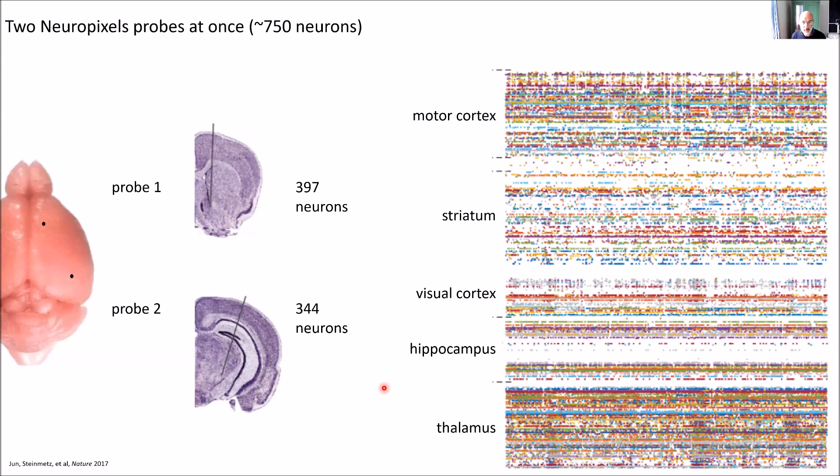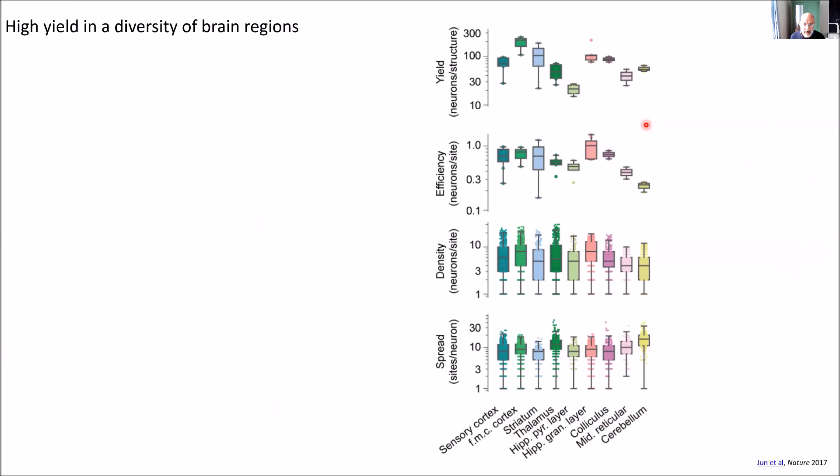You can of course insert two Neuropixels probes at once. This is an experiment that Nick did, in which he inserted two probes, one in here and one in there in the mouse brain, and he obtained about 750 neurons in total in all these structures. This is the classical raster where every row is a neuron and every blip in time is a spike. This is unprecedented. My own PhD in 1995 was about 200 neurons and it took about five years. This was 750 neurons and it took an afternoon, maybe less than an afternoon.